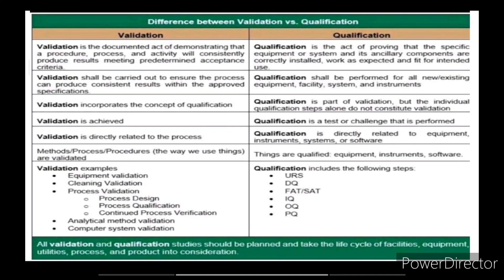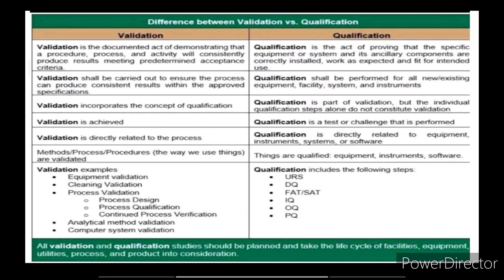Validation is done for methods, processes, and procedures — the way we use things are validated. Qualification applies to things: equipment, instruments, and software are qualified.